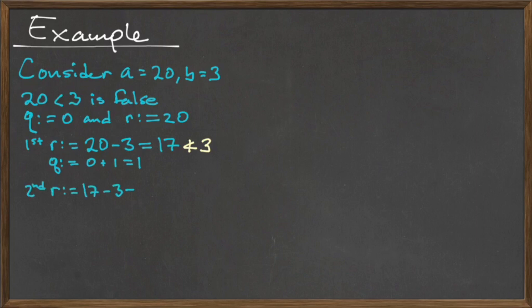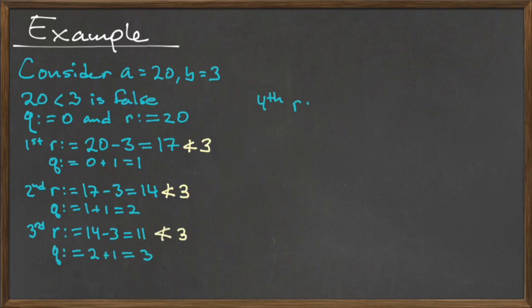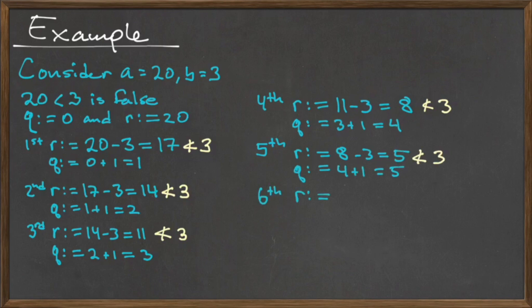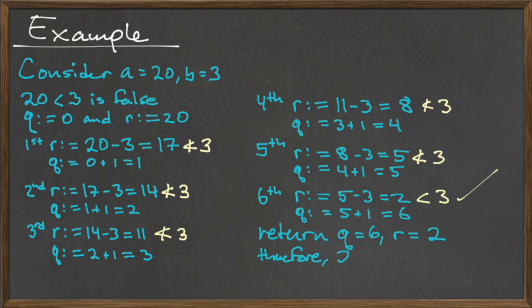This loop must be repeated a further 5 times before the stopping condition r less than b is satisfied. After the 6th iteration, the value for r is equal to 2 and the value for q is equal to 6, and these values are returned as output. So the division of 20 by 3 can be expressed as: 20 equals 3 times 6 plus 2.